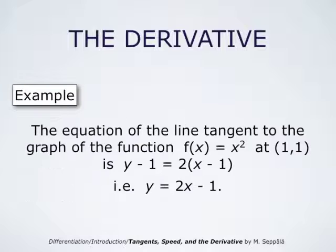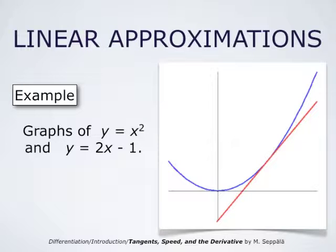We conclude that the slope of the line tangent to the graph of the function x squared at the point (1, 1) is two. This means that the equation for the tangent line is y minus 1 equals 2 times (x minus 1), from which we get y equals 2x minus 1. So this is the line tangent to the graph of y equals x squared at the point (1, 1).